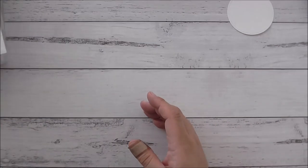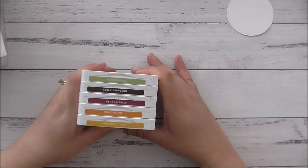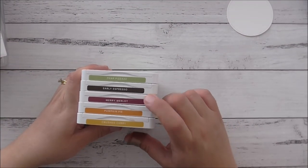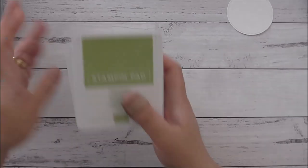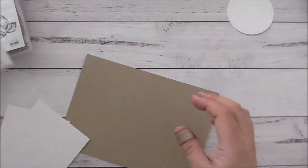I'm also going to be using Pear Pizzazz ink, Early Espresso, Merry Merlot, Pumpkin Pie and Crushed Curry. And I thought I'd do an Australian themed card since I haven't done that and I haven't really utilized this stamp set well enough. So I thought it would be a great time to bring that out again.